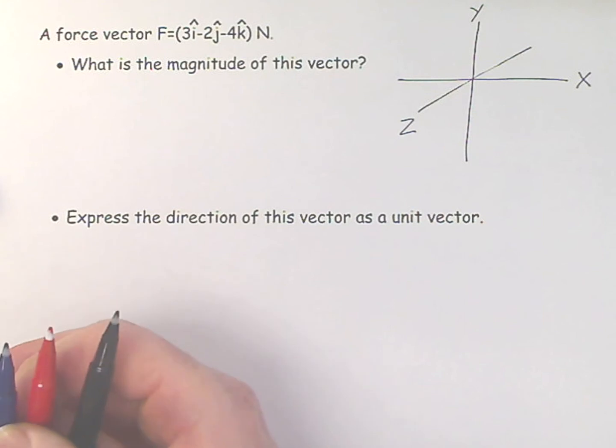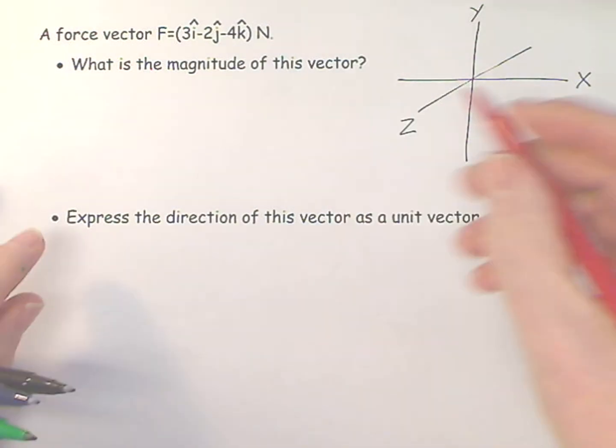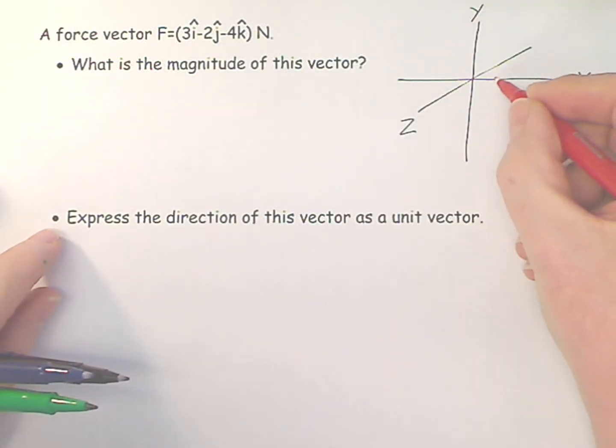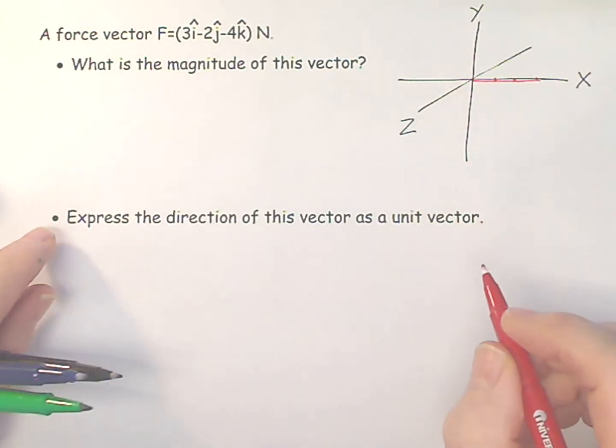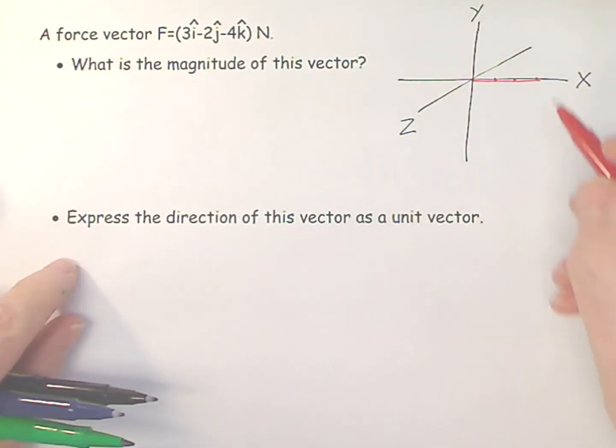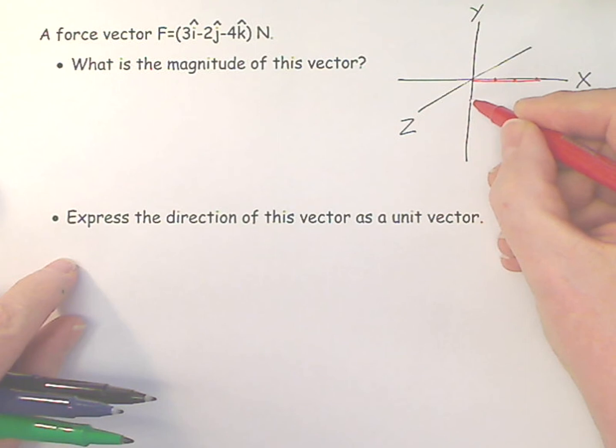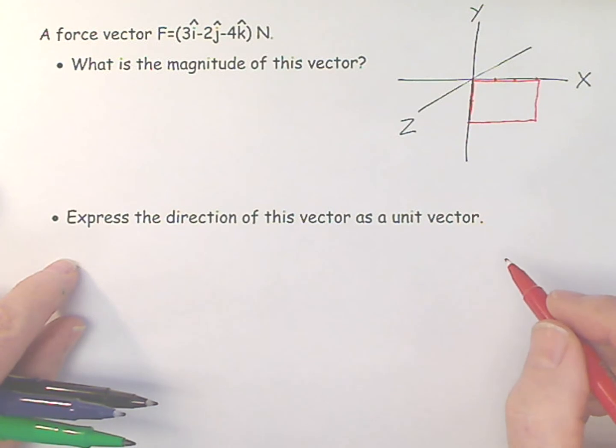And if I draw this first part, this is 3i, so that's three units along the x direction. That's one component, and then we have minus 2j, so let's go down here by minus 2. And I'm building up a cube, and then I have minus 4k. Positive on the z comes out, negative goes in.